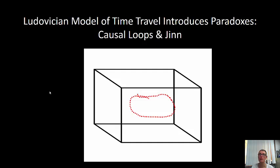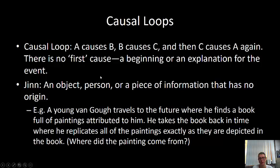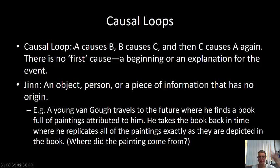A causal loop is this: A causes B, B causes C, and then C causes A again. What's the problem here? There's no explanation for what caused A in the first place. It just is this loop with no beginning, no end, and no explanation for why this happened at all.